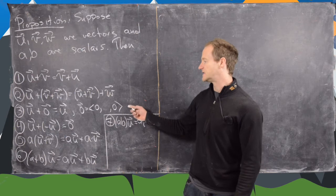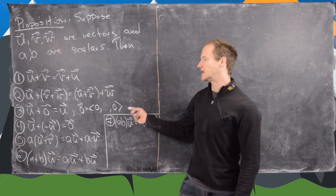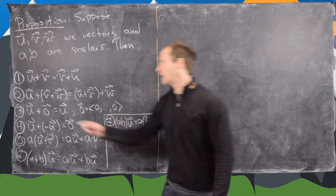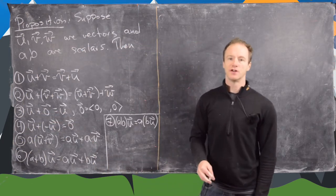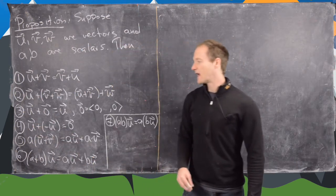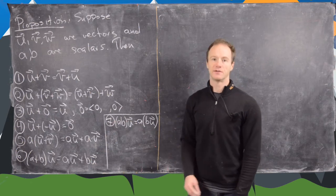Then we have a zero vector, which is like an additive identity. So it's a vector where all the components are zero. And we get u plus the zero vector equals u. We get u plus the scalar multiple of negative one with u equal to zero.